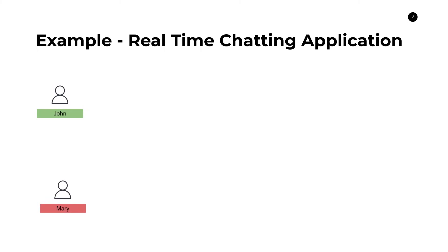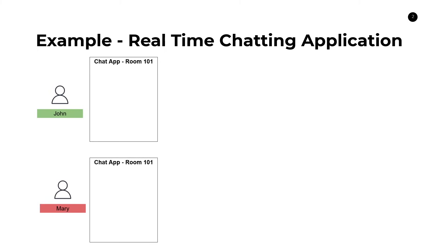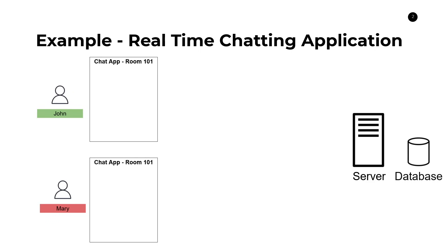More specifically, we're going to be using a real-time chatting application as a toy example for this demonstration. We have two users — John and Mary — and they both want to communicate with one another. Both of them have instances of their chatting application: the top instance is from John's perspective, and the bottom is from Mary's perspective. Typically in these types of application architectures, you have a server to orchestrate communication between both parties, and a database on the server side storing things like event logs and other conversation-related content.